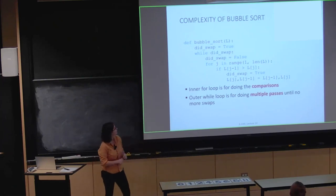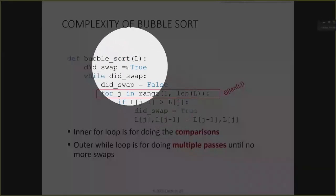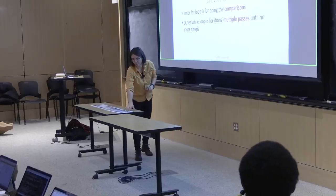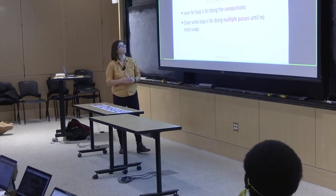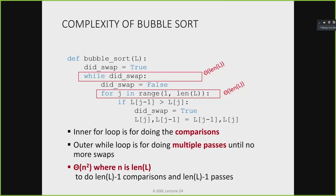For worst case complexity of bubble sort: the inner for loop goes from 1 to the length of the list, so that's theta of n. In the worst case — a completely reversed list — the while loop also repeats n times, because we bubble every element all the way through. So the worst case complexity is theta of n squared, where n is the length of the list. It's pretty inefficient because it always compares all the way through to the end of the list.